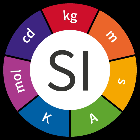m l² t⁻³, that is, the dimensional formula for power is m l² t⁻³.